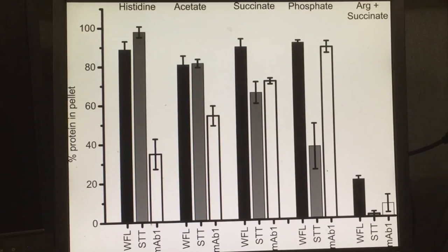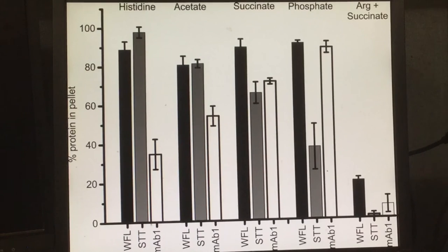However, the more manufacturable protein, STT, shows that this protein performs less well in histidine buffer, but performs very well in phosphate buffer, as this graph shows the percentage of protein in pellet.